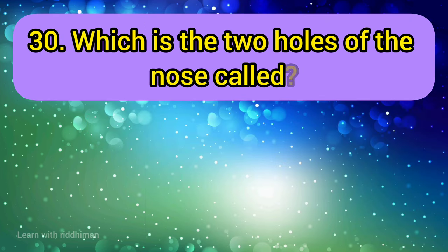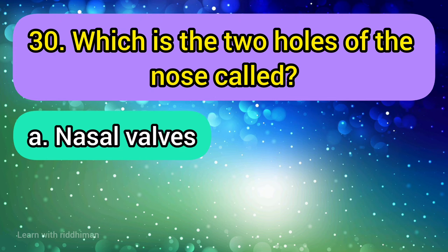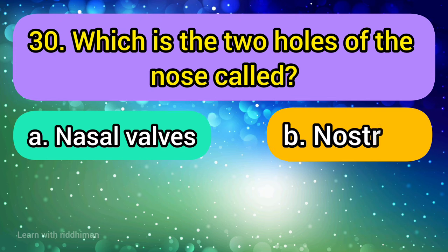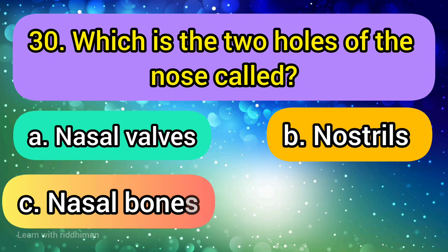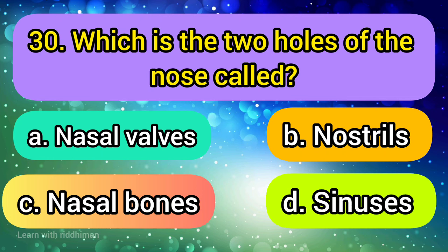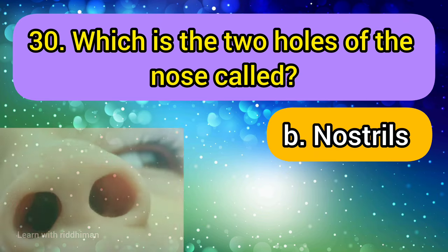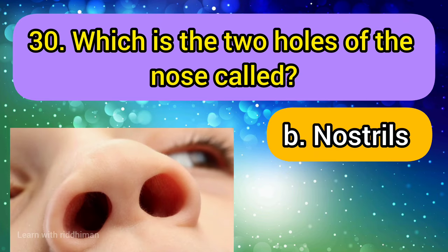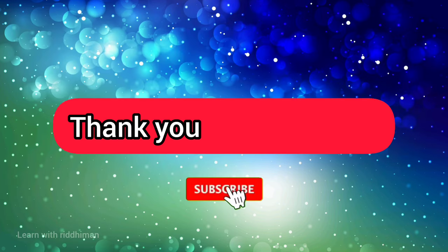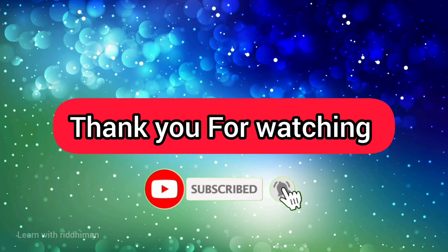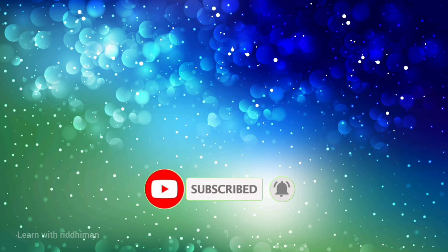What are the two holes of the nose called? Nacelle valves, nostrils, nasal bones, sinus. The answer is nostrils.